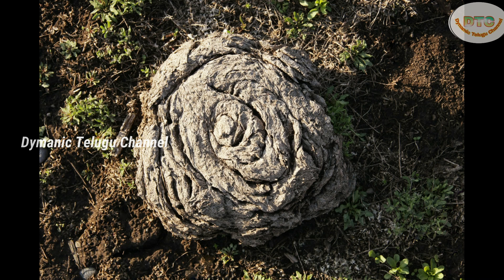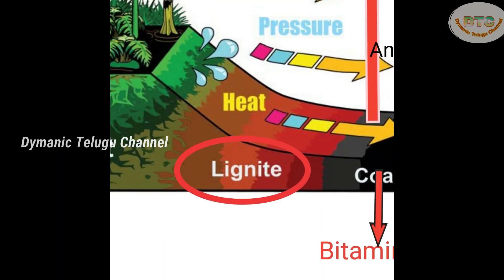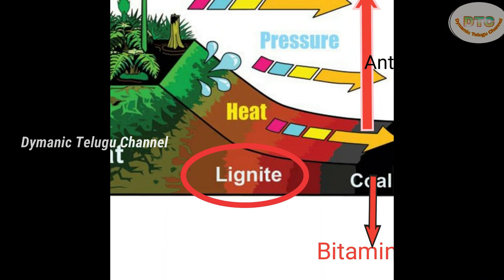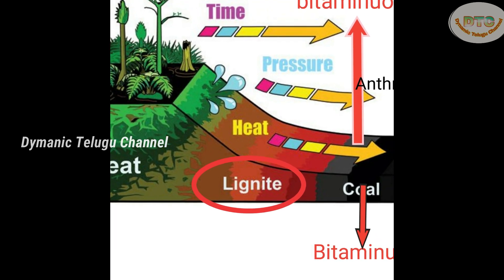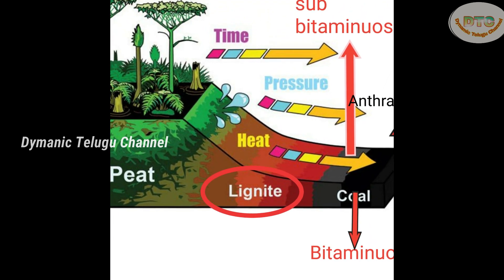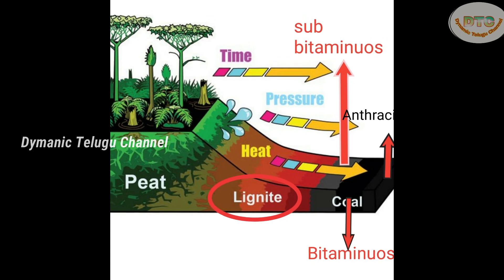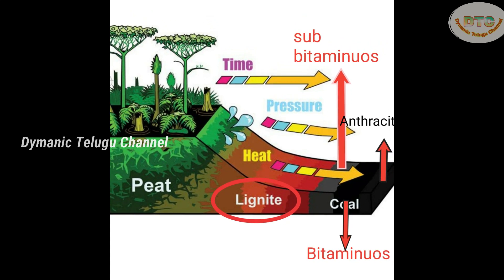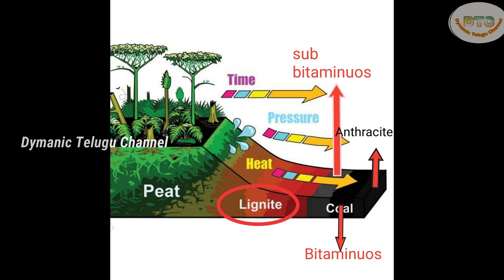The second stage is lignite. Peat transforms into lignite coal. It is also known as low-ranked coal. The next stage involves more heat being produced, and there is more moisture content.